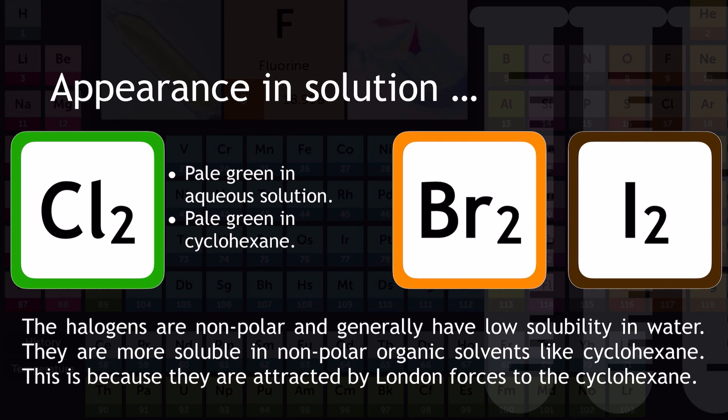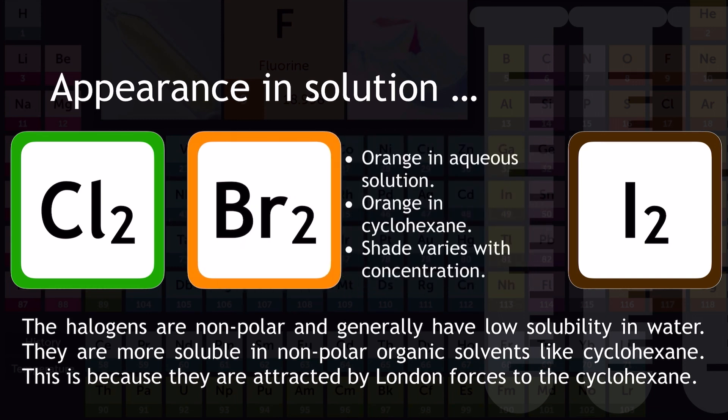Chlorine in aqueous solution, that's with water, is pale green, and it's still pale green in cyclohexane. Bromine is orange in aqueous solution, so that's with water again, and it's also orange in cyclohexane. You might see references to bromine being yellow or red, and that's because the shade that we see for the bromine around that orange color varies with concentration.